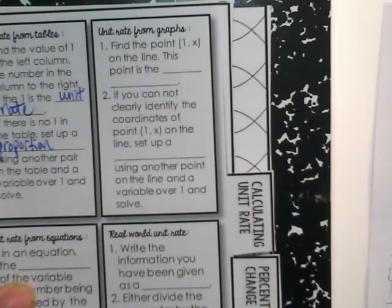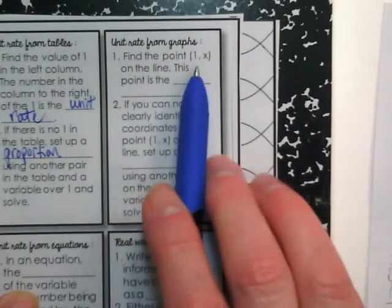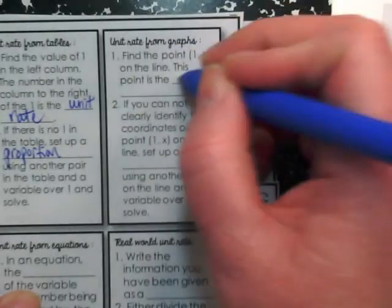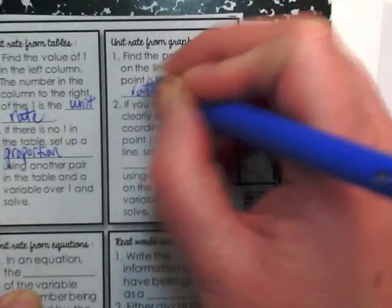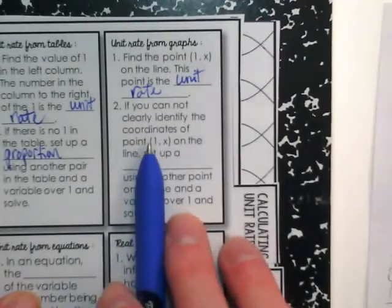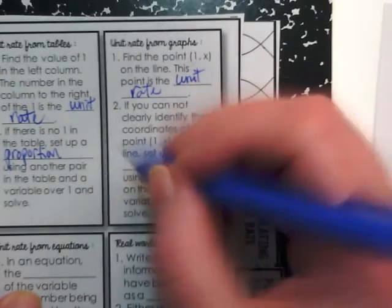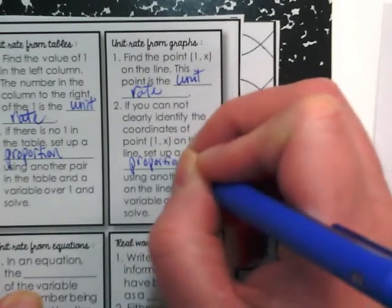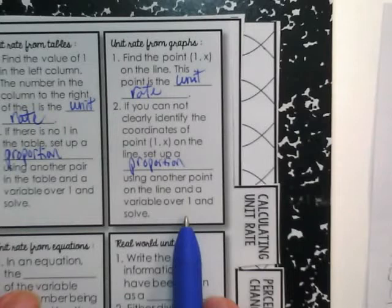Finding the unit rate from graphs: find the point (1, x) on the line. This point is the unit rate. If you cannot clearly identify the coordinates of point (1, x) on the line, set up a proportion using another point on the line and a variable over one, and solve.